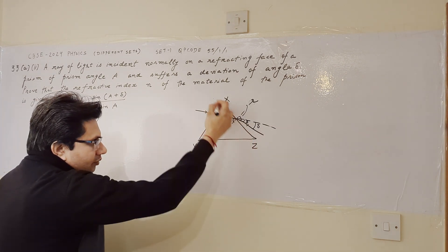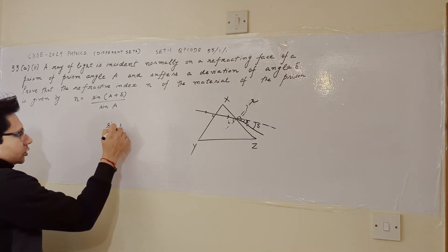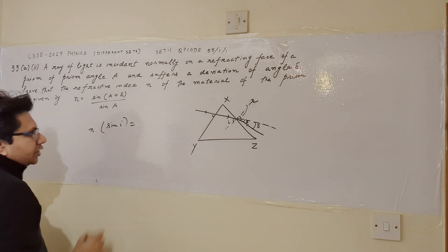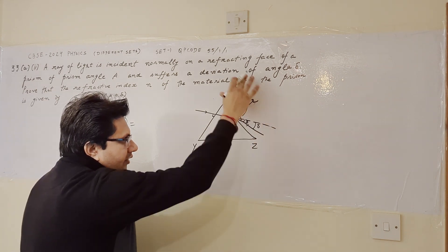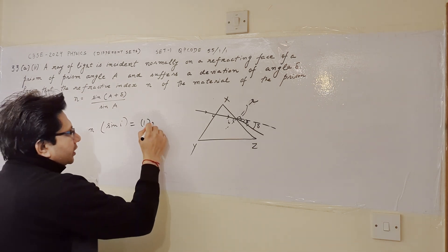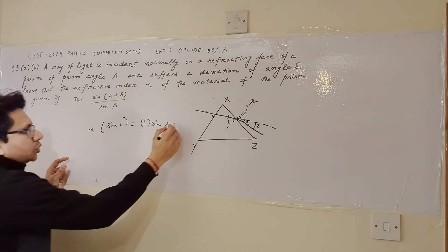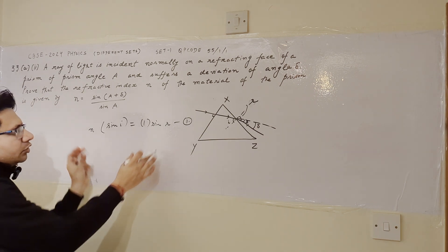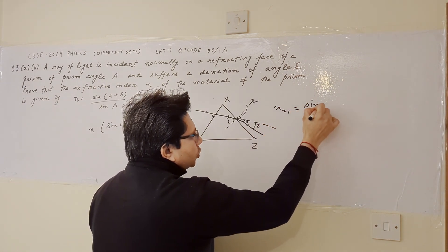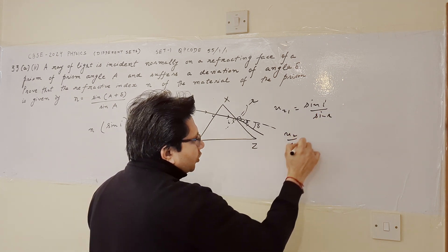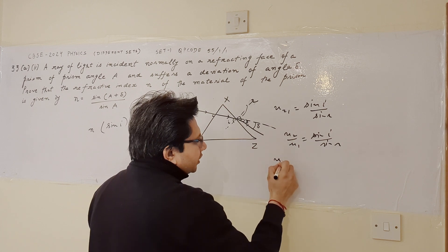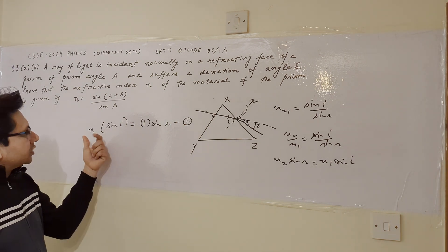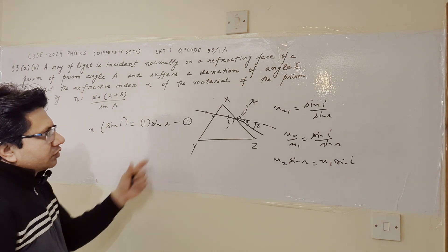Now we apply Snell's law at the second interface. The angle of incidence is i, and the refractive index of the prism material is n. Snell's law gives: n sin(i) = 1 × sin(r), since the outside medium is air with refractive index 1. This simplifies to n sin(i) = sin(r). This is equation one.